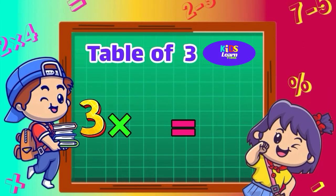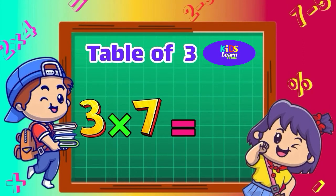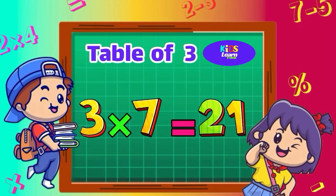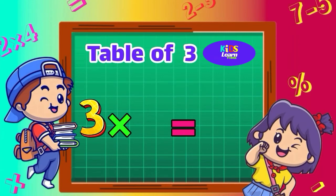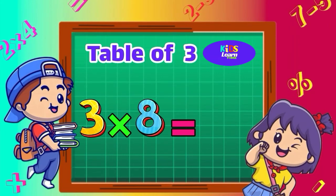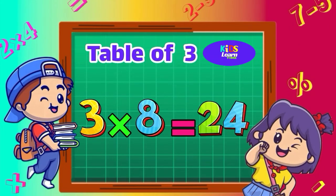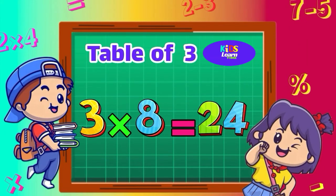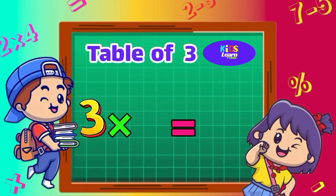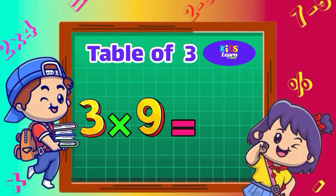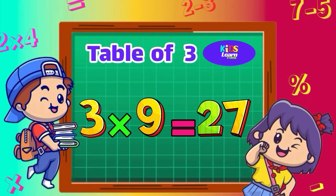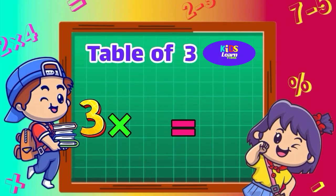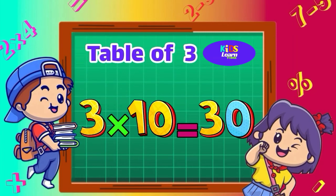Three sevens are twenty-one. Three eights are twenty-four. Three nines are twenty-seven. Three tens are thirty.